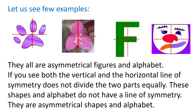Children, let us see a few examples of asymmetrical shapes and alphabets. The pictures shown here are all asymmetrical figures and alphabets. If you see both the vertical and the horizontal line of symmetry, they do not divide the two parts equally. These shapes and alphabets do not have a line of symmetry — they are all asymmetrical.